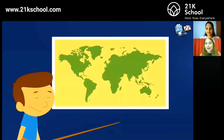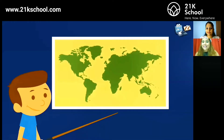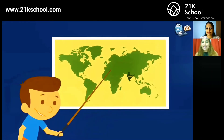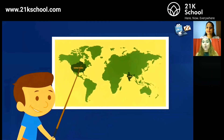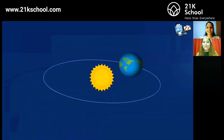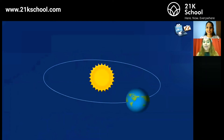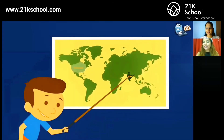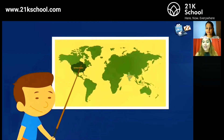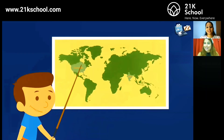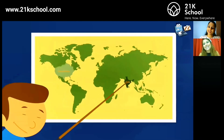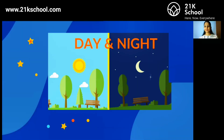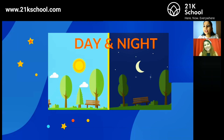Look at this map — India and USA are on the opposite side of the globe. When the Earth rotates, it takes 24 hours to complete one rotation. That's why when there is day in India, it's night in USA, and when there is day in USA, it's night in India.